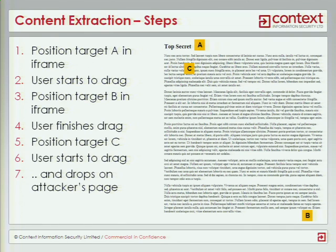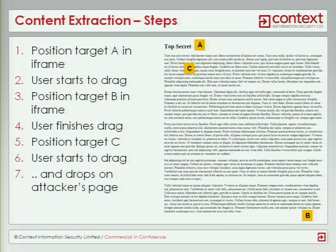So here's how we do it. This is a document which, let's say we know the URL of it but we don't know the content. So if the user's authenticated and has access to the document, we might want to try and steal the content from the user. Again, we use the hidden iframe concept. First of all, we place the document in the hidden iframe and target the top of the page. Then the user starts to drag — for example, the sliding block puzzle I showed at the beginning. So the first time we start to drag a piece, that starts to create a selection.